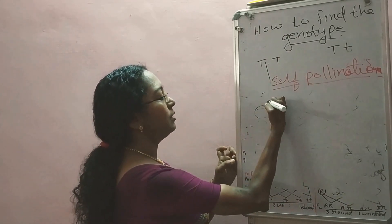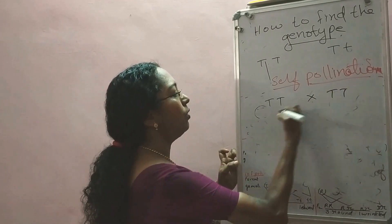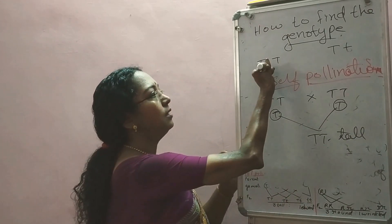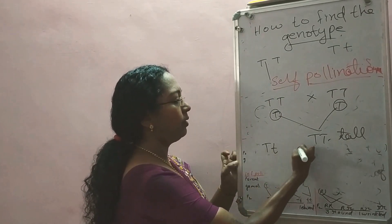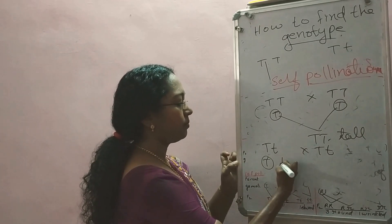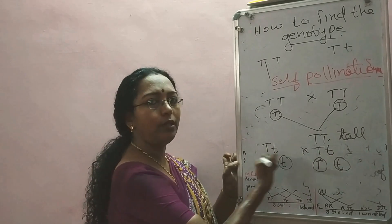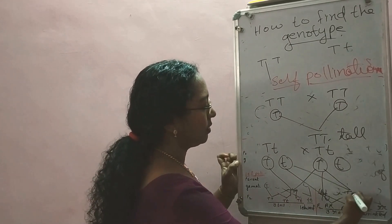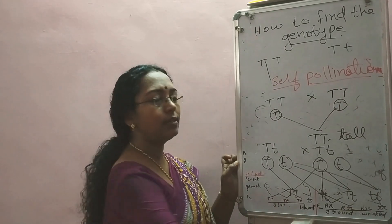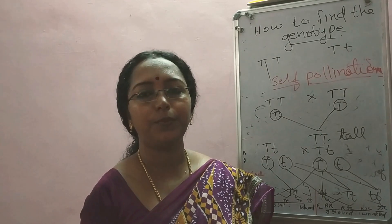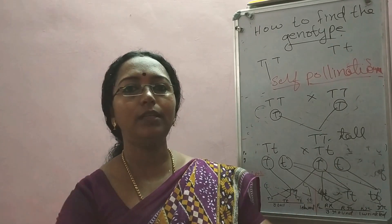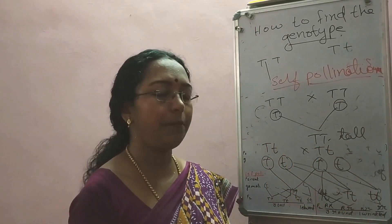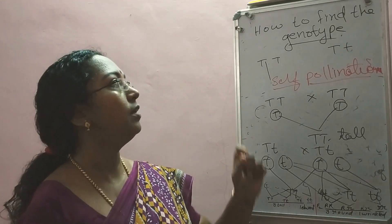Take the first plant capital T capital T and do self-pollination. The gametes fuse and I will get all tall plants — that means the sample is homozygous. For the next case, capital T small t, if I do self-pollination I get the same as our F2 ratio: three tall plants and one dwarf. So if tall and dwarf both appear as a result of that cross, the parent is heterozygous. If all come out tall, the parent is homozygous. These are the two methods to find out the genotype.